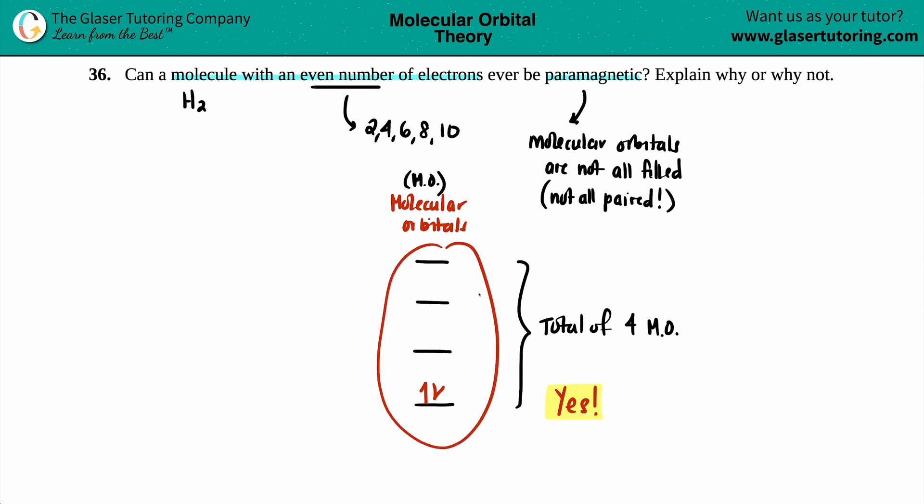So explain why or why not. Basically, you're just talking about how the number of molecular orbitals are not filled, but you still have your even number. In this case, you have two electrons. That's an even number.